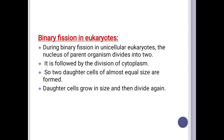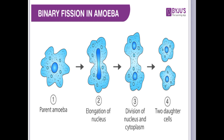Next, let's look at binary fission in unicellular eukaryotes, such as protozoa. It is similar to what happens in prokaryotes. Here, instead of DNA, we use the term 'nucleus', because eukaryotes have a prominent nucleus. First, there is a parent amoeba — a parent cell — in which the nucleus divides first. Then the two daughter nuclei move towards opposite poles, after which the cytoplasm divides. The resulting cells are the exact copy of their parent amoeba cell.